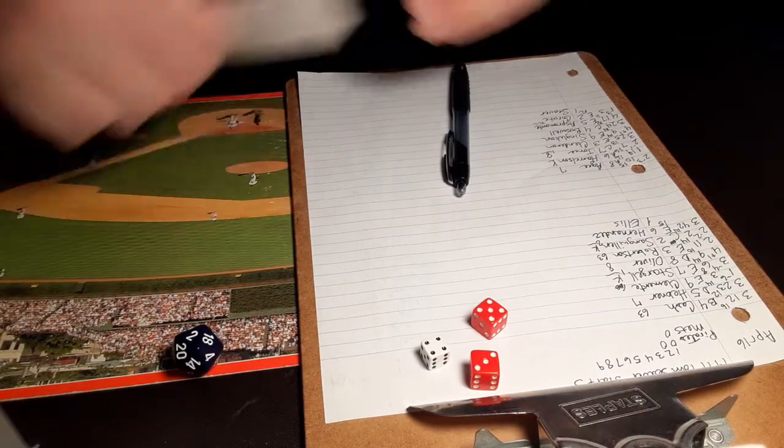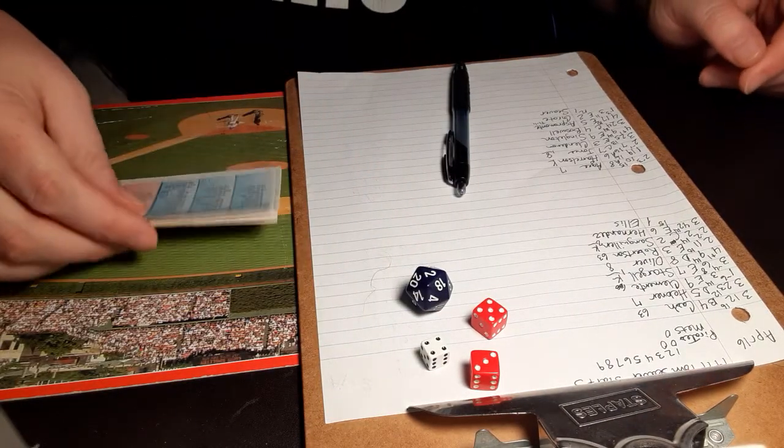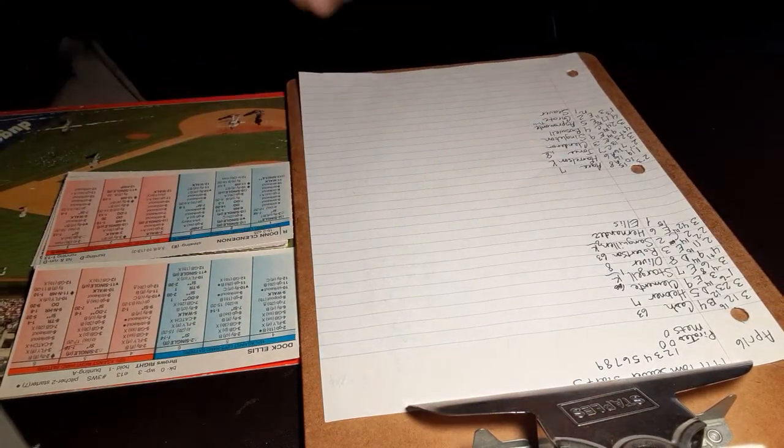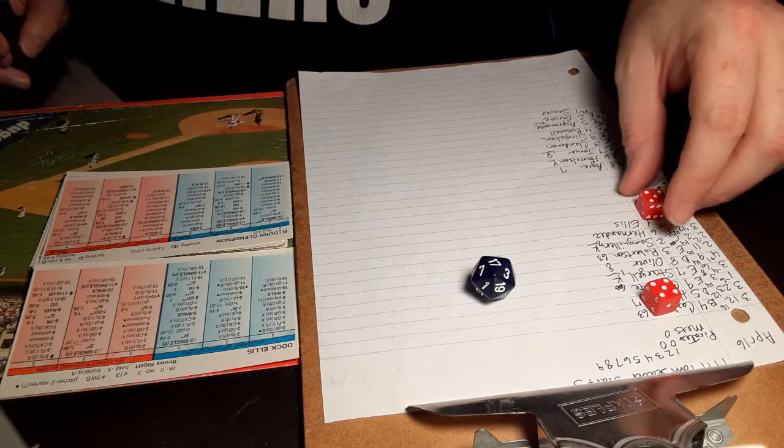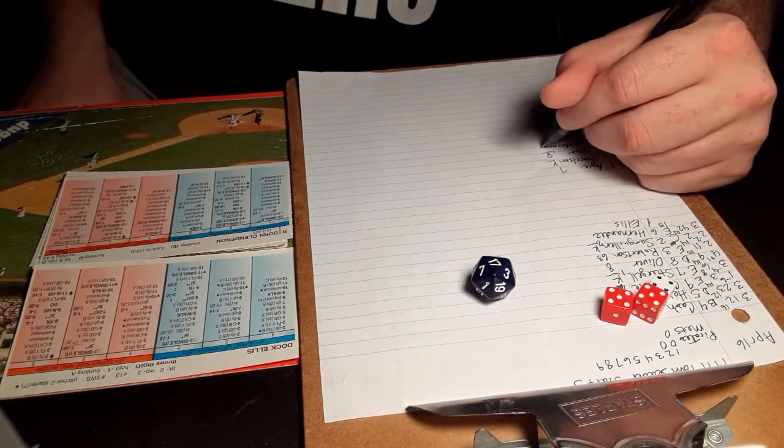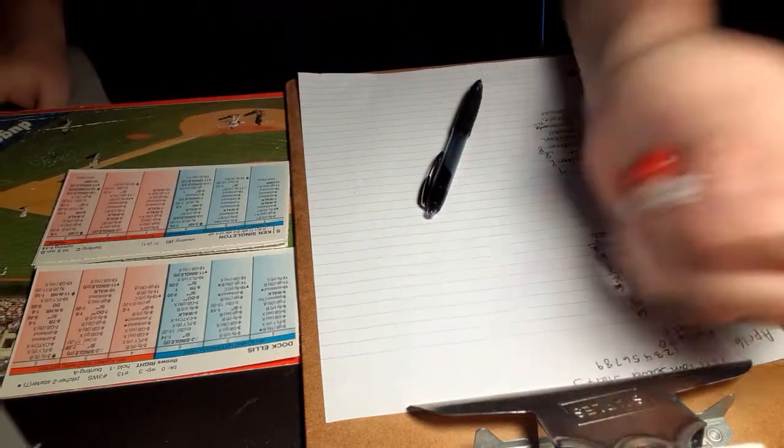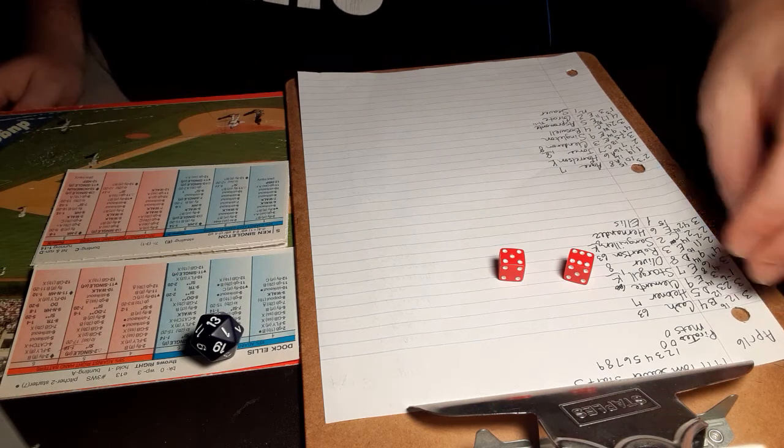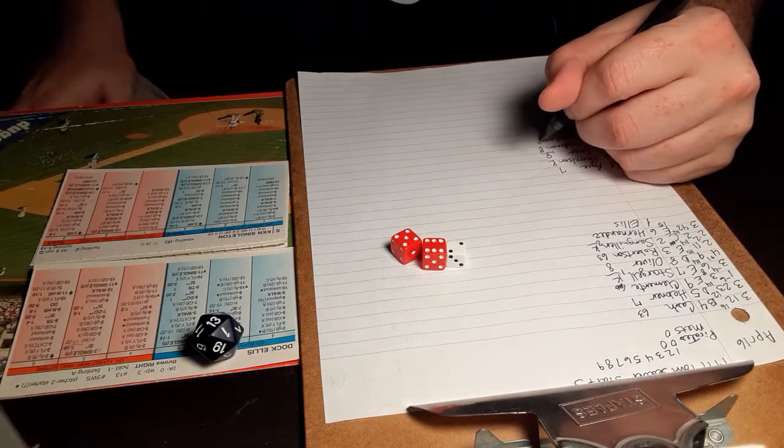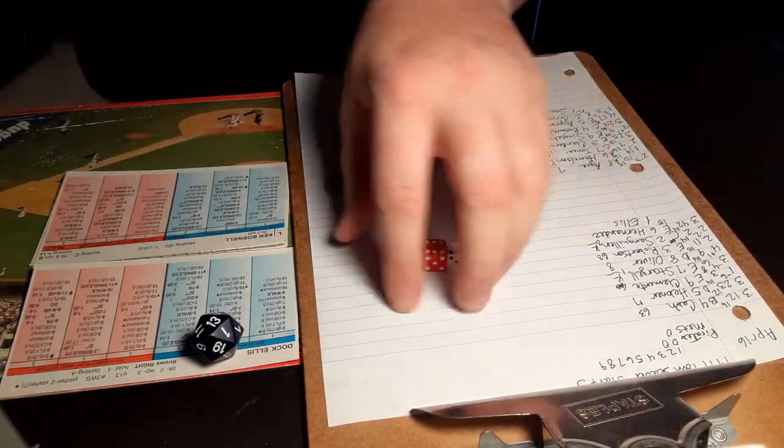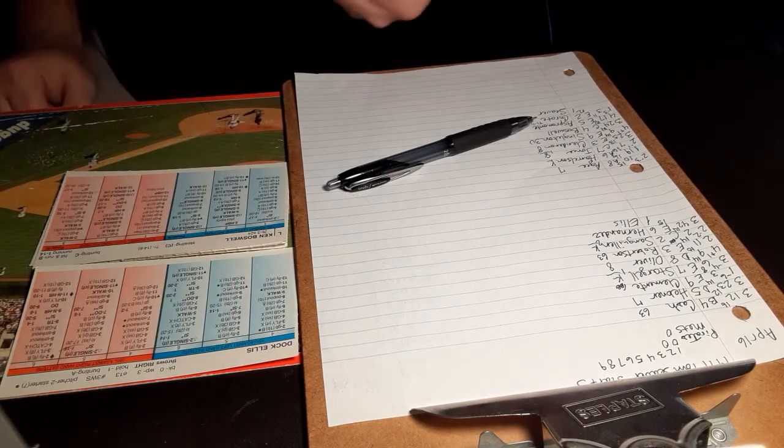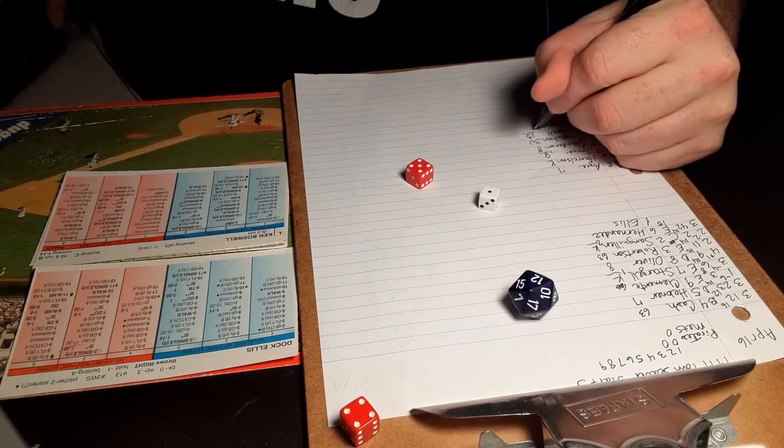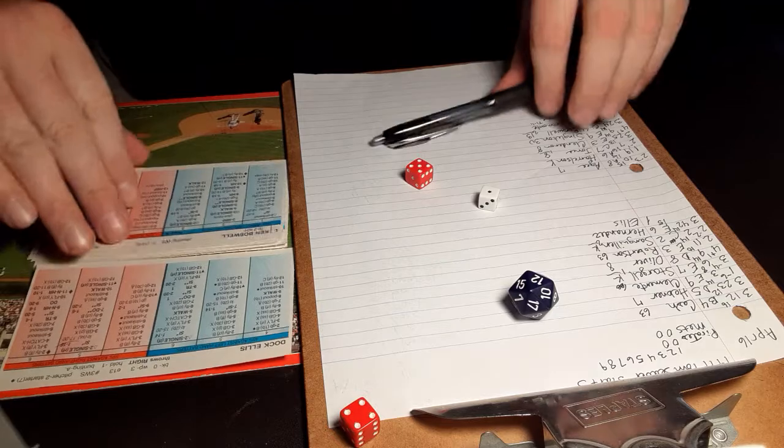Go to the bottom half of the second, no score. And leading off is Don Clendenin, the first baseman. And a 4-10 is a fly ball to center field. Racing in is Oliver, he will make the catch. One down. And here's Kent Singleton, the switch-hitting right fielder. 2-11, that's a ground ball to first. Robertson takes it to the bag himself, two down. And here is Ken Boswell. 1-9, ground ball right back to the mound. Ellis takes it to first, and that will retire the side.